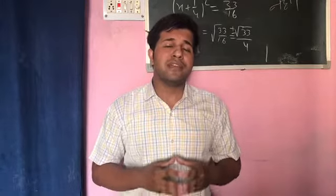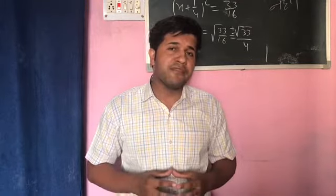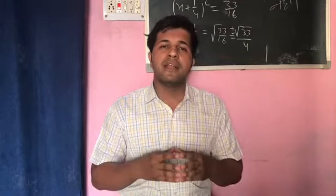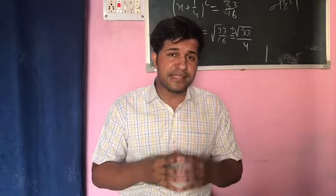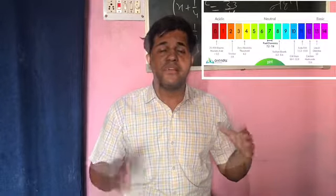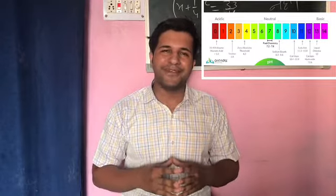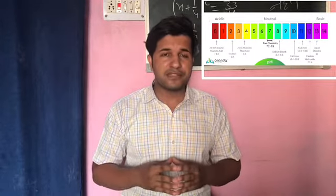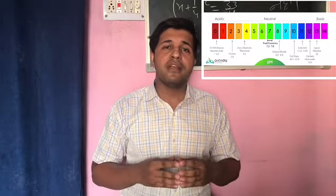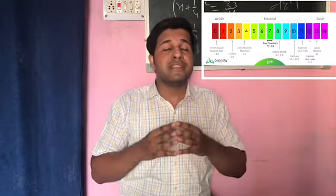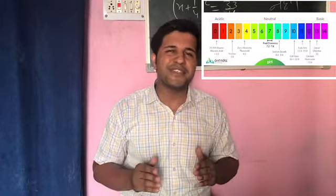Now to understand the acid and base completely, you need to understand first the pH scale. The pH scale is the scale which we are looking here. The pH scale carries count from 0 to 14. If a substance has a value below 7, then the substance is known as the acidic substance.